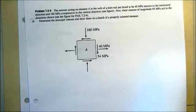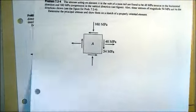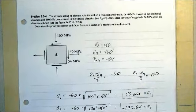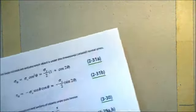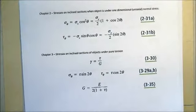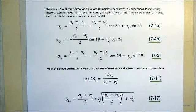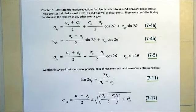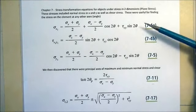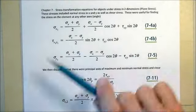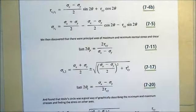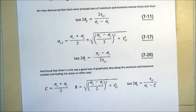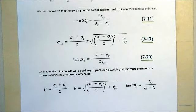We did a couple of examples — one that has both sigma-x, sigma-y, and some shear — and that led us to Mohr's circle, which we did some exercises on. Here is a summary of all the equations: the equations from chapter 2 and chapter 3 for stresses on inclined sections, and so far in chapter 7 — stresses at any angle (sigma-x1, sigma-y1, and tau on that angle), principal stresses, and Mohr's circle equations. Mohr's circle construction itself won't be covered in this video.